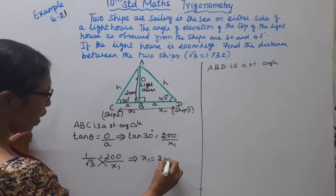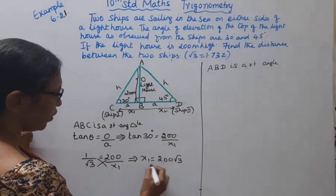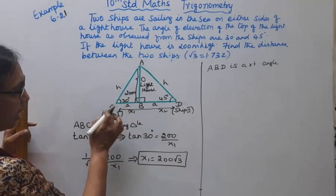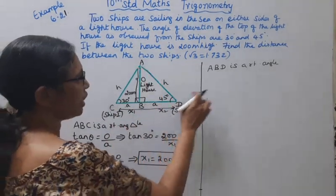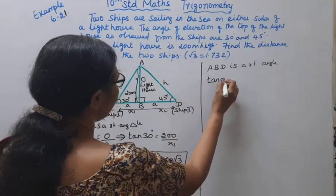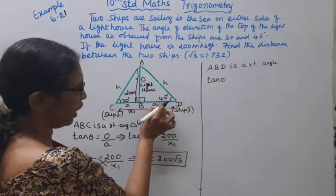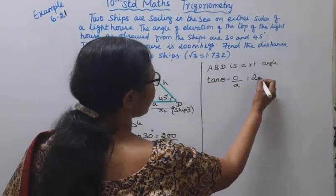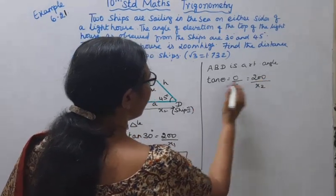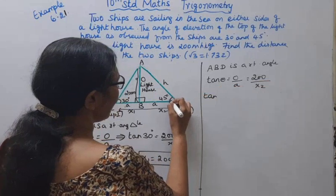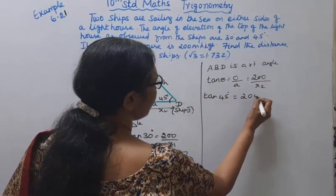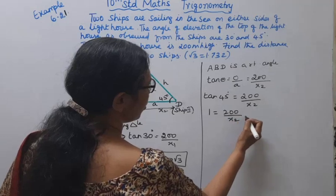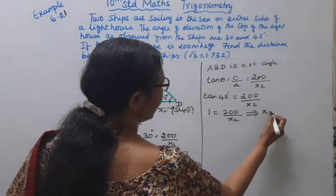For triangle ABC, x1 equals 200 into root 3. For triangle ABD, using tan theta: tan 45 degrees equals 200 divided by x2. Since tan 45 equals 1, cross-multiplying gives x2 equals 200.